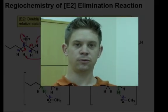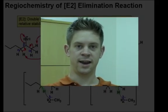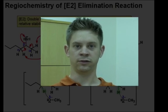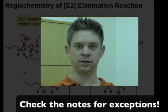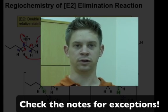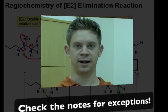The take-home message from this webcast is that it is certainly possible to predict the regiochemistry of the E2 elimination reaction. All you have to do is look at the stability of the two double bonds that would result in the context of our stability trend, that substitution correlates with the stability of alkenes.